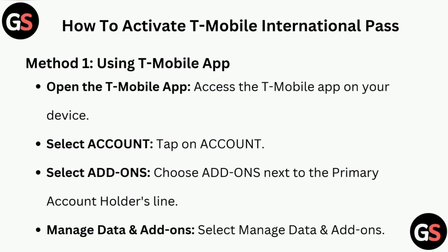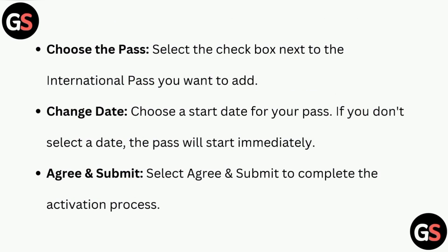Select Account, then tap on Account. Select Add-ons — choose Add-ons next to the primary account holder's line. Then select Manage Data and Add-ons. Choose the pass by selecting the checkbox next to the International Pass you want to add.